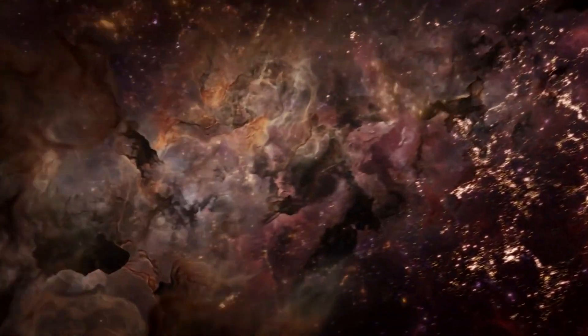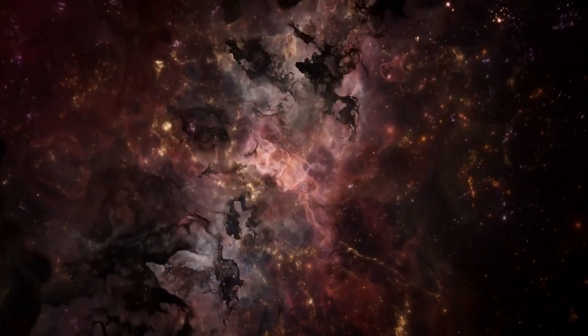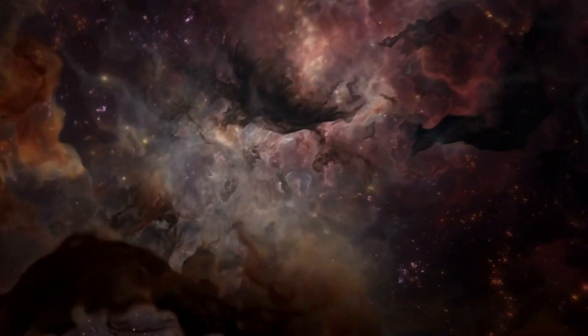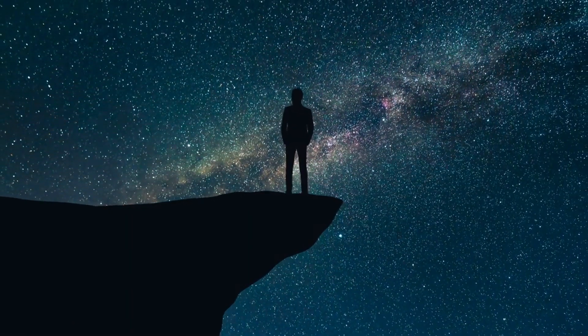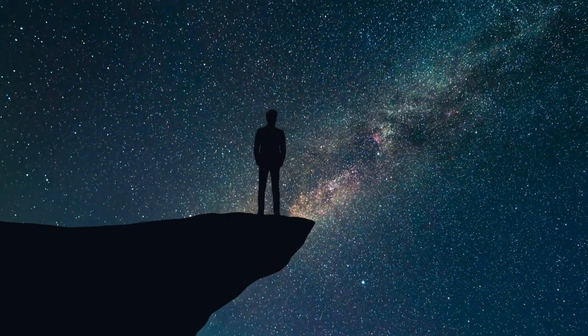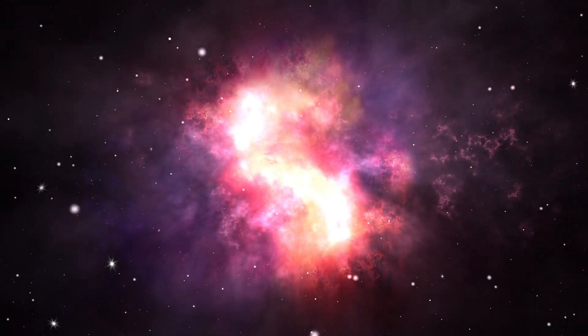We explored how plasma forms filaments, how it carries current through space, and how those currents, called Birkeland currents, link Earth to the Sun and beyond. We saw how the same structures and dynamics that shape auroras on Earth may also shape galaxies, interstellar clouds, and the cosmic web itself.